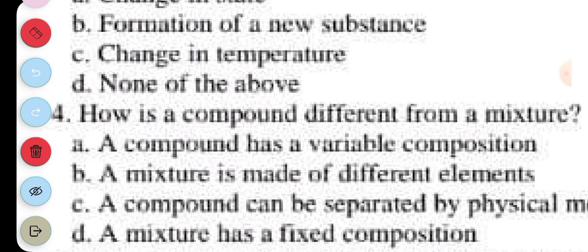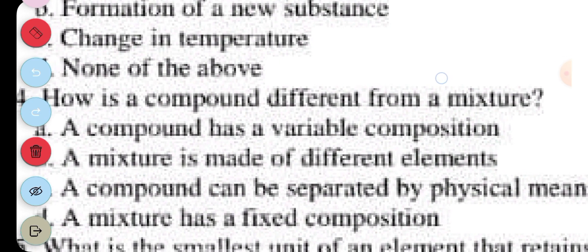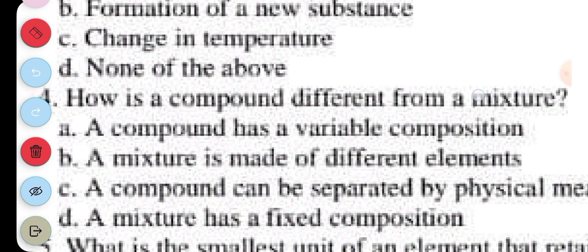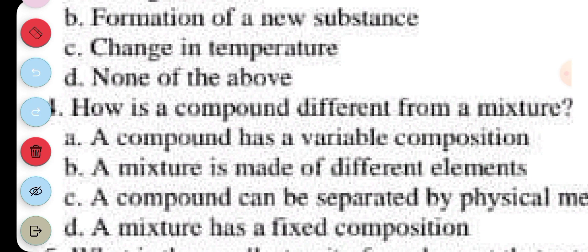Question 4. How is a compound different from a mixture? A. A compound has a variable composition, B. A mixture is made of different elements, C. A compound can be separated by physical means, D. A mixture has fixed composition. The answer to question 4 is D. A mixture has fixed composition.